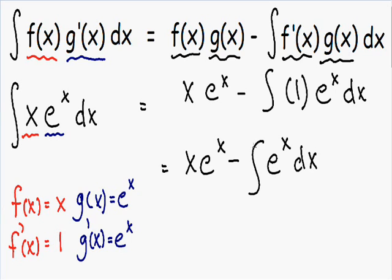So notice now we have an integral that's much simpler. The integral of e to the x, which can be solved just using basic integration. So we took this complicated integral of x times e to the x and we used integration by parts to rewrite it in a much simpler way, which we can just integrate using basic integration. So let's continue.